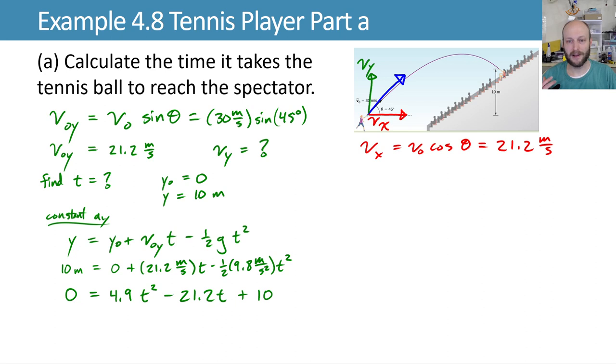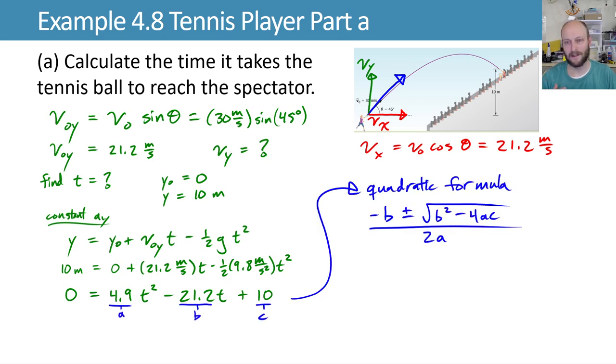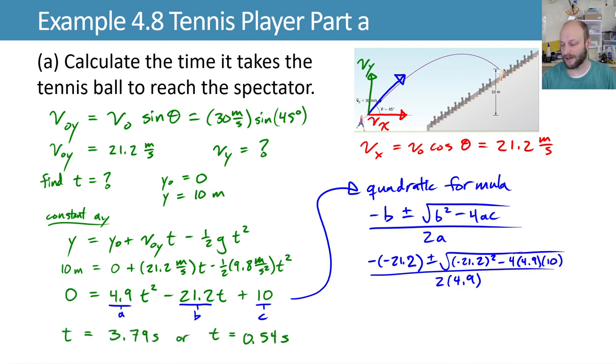So we'll identify our a, b, and c and plug it into a quadratic formula: negative b plus or minus the square root of b squared minus 4ac over 2a. Plugging in our a, b, and c, we get some possible answers. We get on the high side 3.79 seconds, or on the low side 0.54 seconds. The question is, which one is actually the case here?